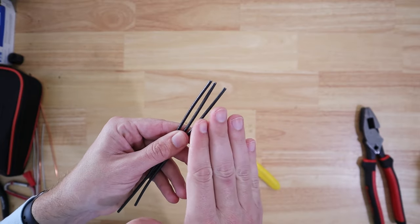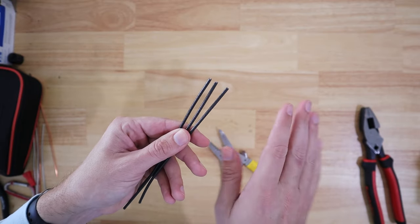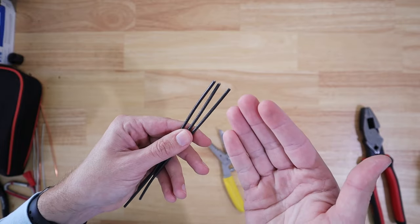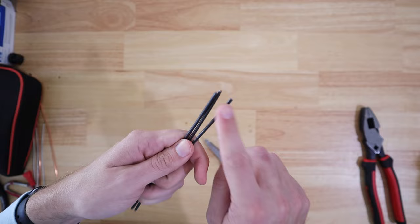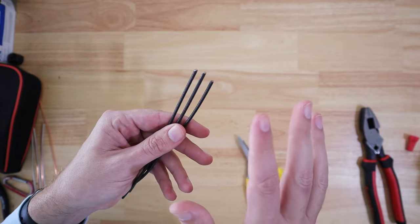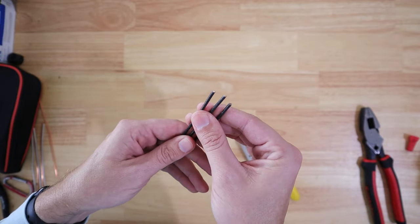First thing for people that don't know what pre-twisting is or why it's done, pre-twisting is exactly how it sounds. It's pre-twisting the wires together before you put a wire nut on top. So really quickly I'll show you the general demonstration of how that's done.